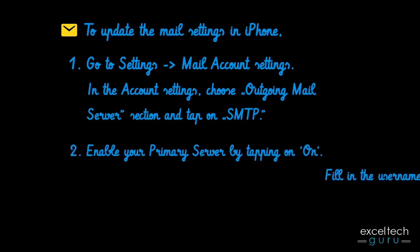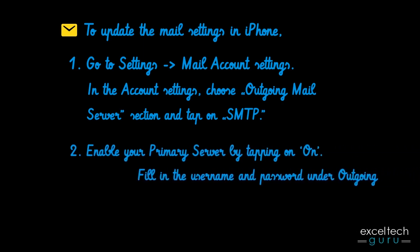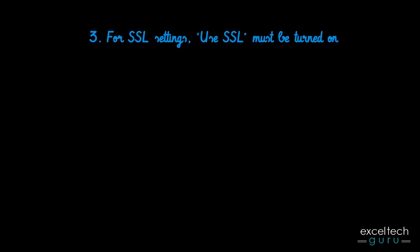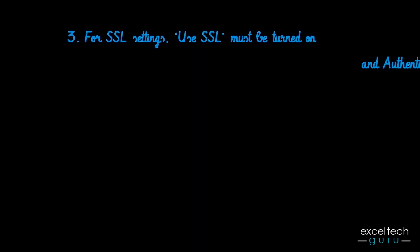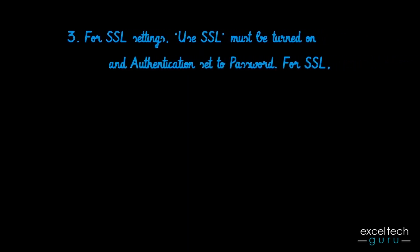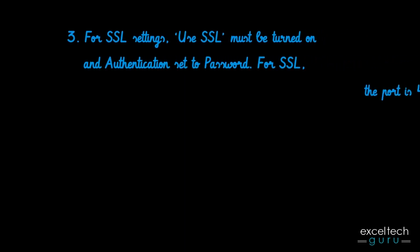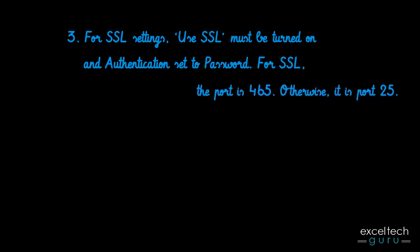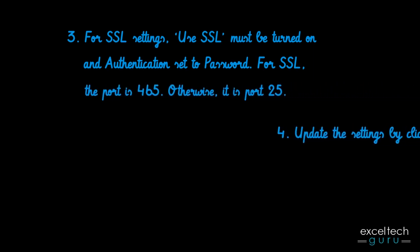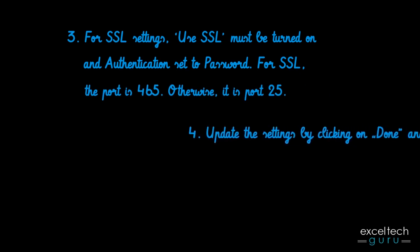Enable the primary server by tapping on it, then fill in the username and password under outgoing mail server. For SSL settings, use SSL must be turned on and authentication set to password. For SSL, the port is 465; otherwise it is port 25.